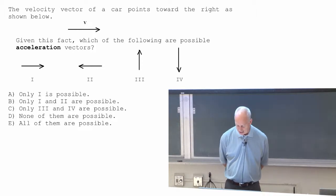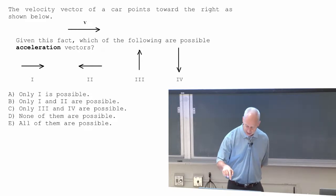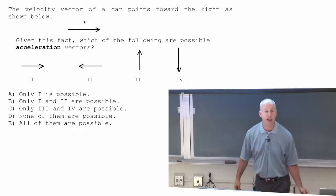So my question for you, given this fact, which of the following are possible acceleration vectors? Acceleration vector tells you the time rate of change. So this is a question of how might the velocity be changing? Given that you know the velocity there, which of these is the best description of how the velocity might be changing?